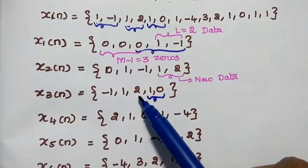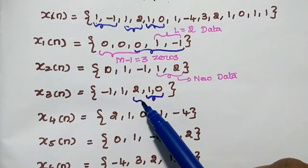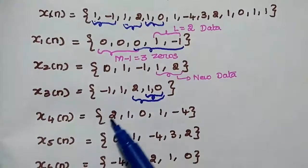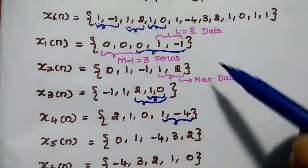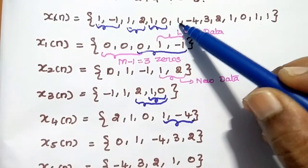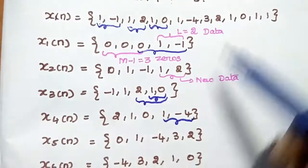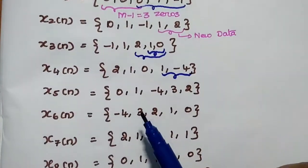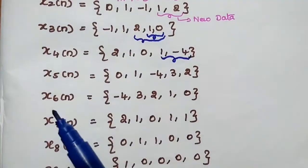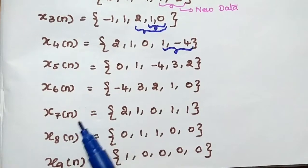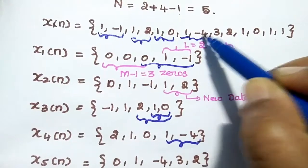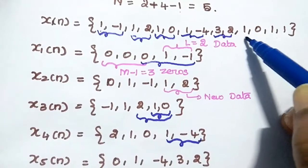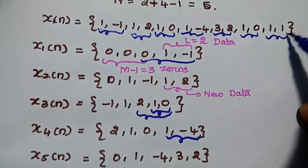Next, x4(n): we take the 3 overlapping data points {2, 1, 0} from the previous block, and the 2 new data values are {1, -4}. Similarly, we can form x5(n), x6(n), x7(n), and x8(n), each time taking 2 new data values from the input sequence along with the last 3 values from the previous block.